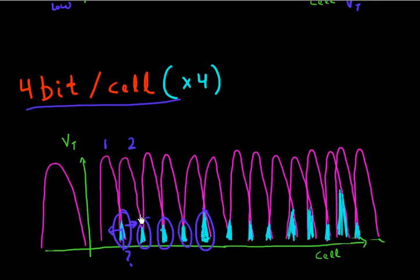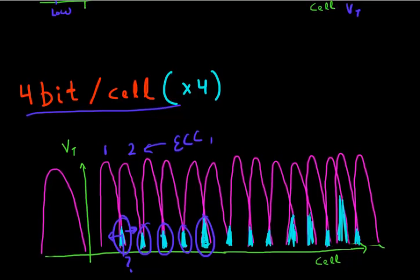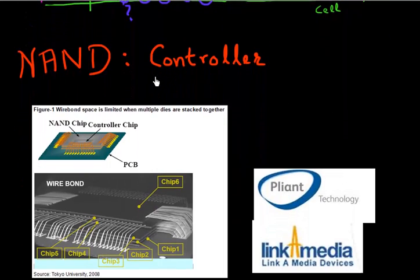And there's a lot of technology which goes into error correction of these states, and a lot of action has actually moved in the controller space. So this controller chip, whose job is essentially to program and erase and read these cells, has become more and more sophisticated.